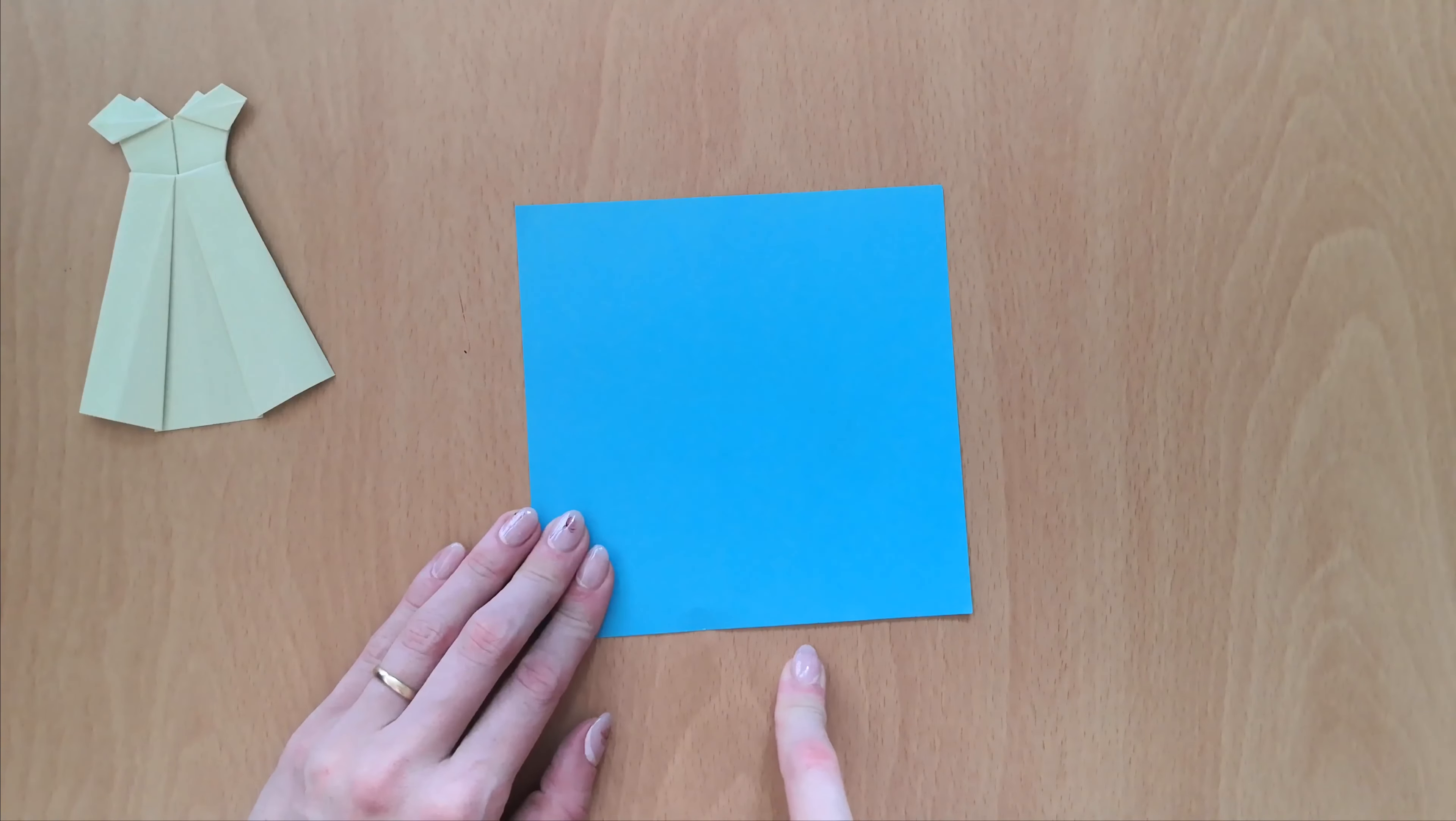Let's start by folding the paper in half. In the next step, open the paper and fold the sides of it into the center line.